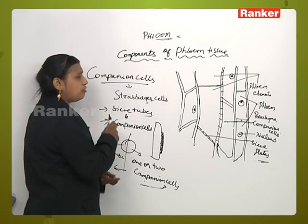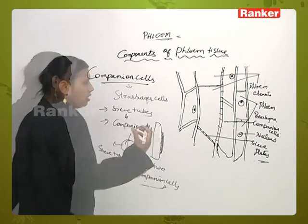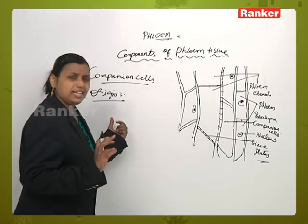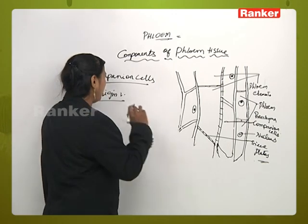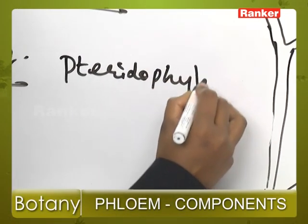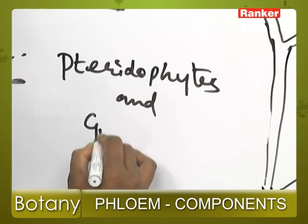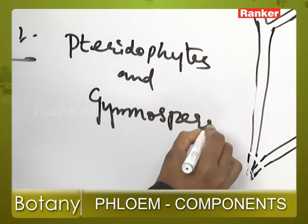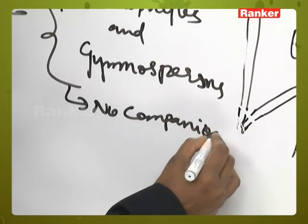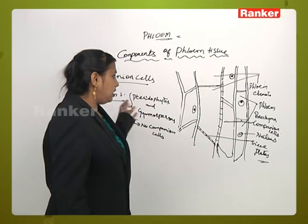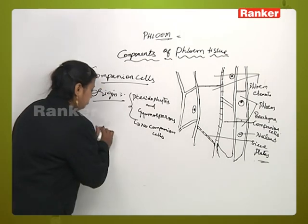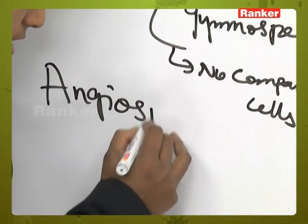When we come to the origin of companion cells — from where do they originate? We cannot see the existence of companion cells in pteridophytes and gymnosperms. Companion cells are present in angiosperms.